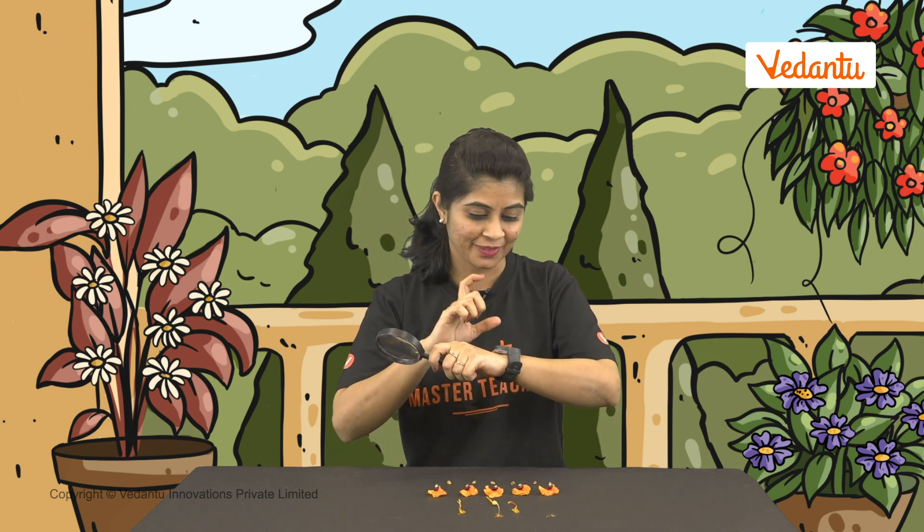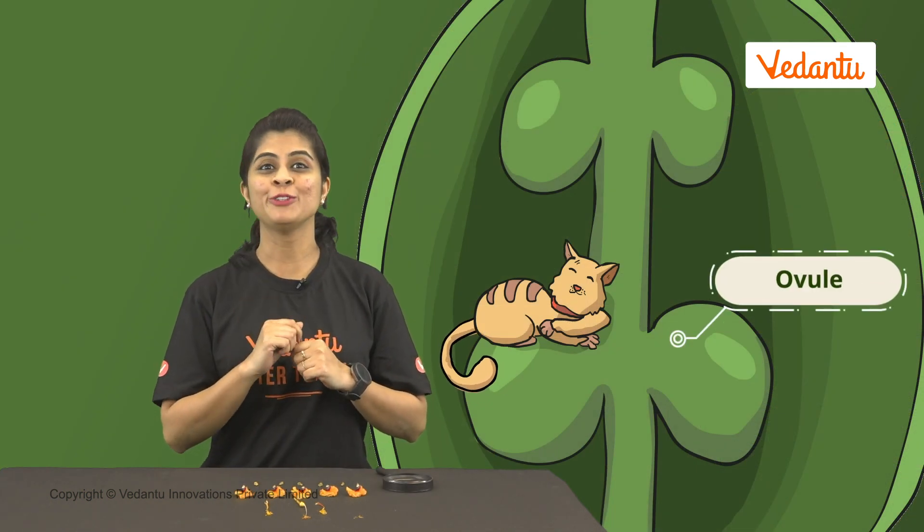Flowers are so simple, yet so complex. Let's see what is on the inside of the ovary of a hibiscus flower. Do you see these bead-like structures? They are called ovules.